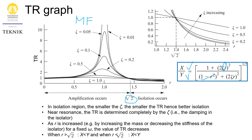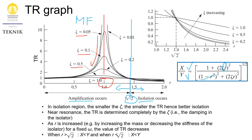The TR graph is divided into two domains. To the left is the amplification region; to the right is the isolation region. In the amplification region, near resonance, the transmissibility is very high. One strategy to reduce it is to increase zeta. As damping increases, the peak in the amplification region drops.